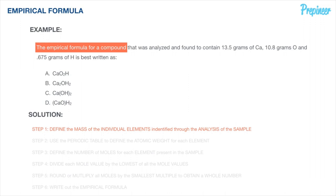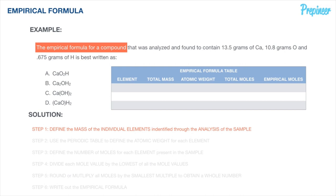In previous problems we were given the molecular formula directly, but in this problem we start from an analysis. Step 1 is to define the mass of all individual elements identified. Using a table to organize our work, we have: calcium at 13.5 grams, oxygen at 10.8 grams, and hydrogen at 0.675 grams.